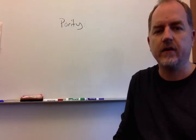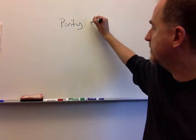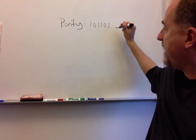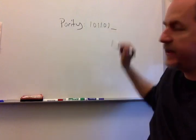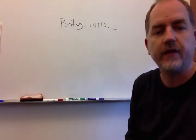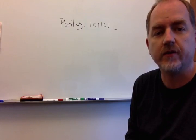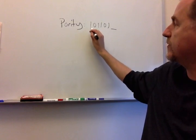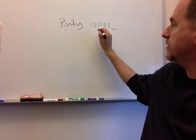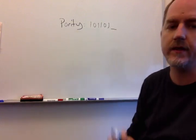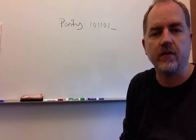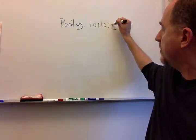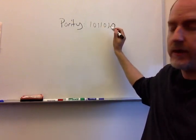In parity, we take binary data, such as this, and we add an additional bit at the end that reflects how many ones or zeros there are in the data. In the idea of even parity, you count up the number of ones. So in this case there's one, two, three, four ones, which is an even number, and the parity bit we add is going to be zero to maintain that number of ones.